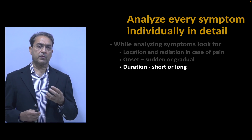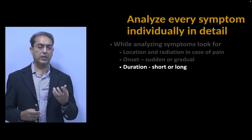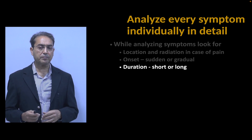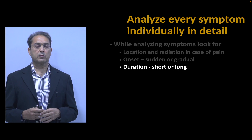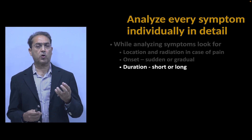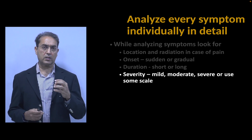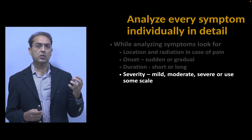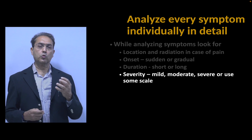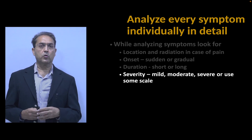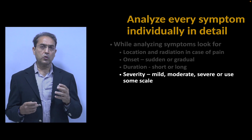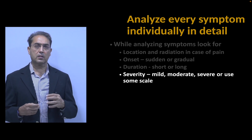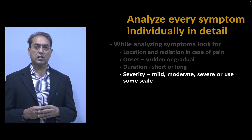Assess the severity of the symptoms — whether mild, moderate, or severe. You can use scales: for pain, a 0–10 numeric scale; for heart failure, the NYHA classification. Using scales helps assess the subsequent progress of the disease with treatment, indicating whether the patient is improving or deteriorating.